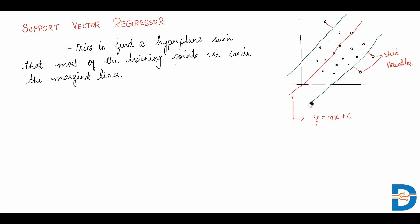This is called the epsilon tube — it refers to the width of the tube. The hyperplane which has the maximum number of training points within these marginal lines is called the optimal hyperplane.